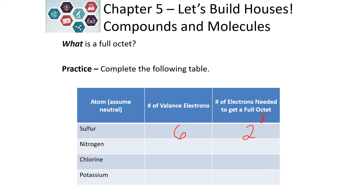Nitrogen, because it's in column 15 or column 5, has five valence electrons and needs three more to get to the full octet. Chlorine is in column 17 or column 7, so it has seven valence electrons and needs to gain one.